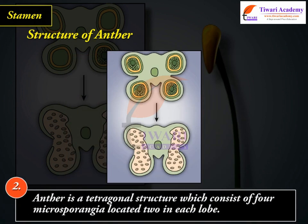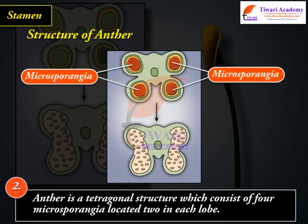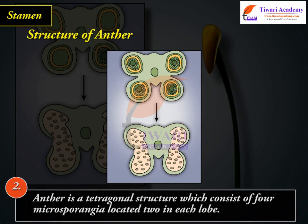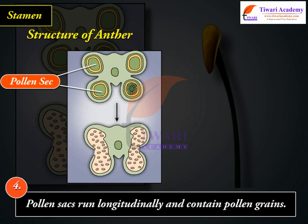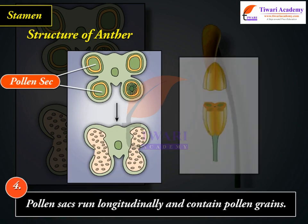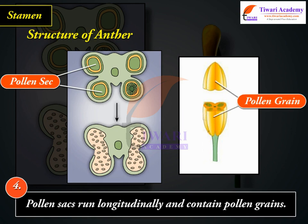2. Anther is a tetragonal structure which consists of four microsporangia located two in each lobe. 3. Microsporangium develops into pollen sacs. 4. Pollen sacs run longitudinally and contain pollen grains.